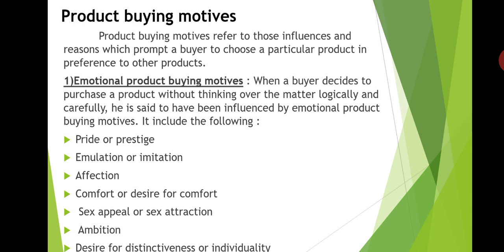One more is comfort and desire for comfort. Many products — for example, fans, refrigerators, washing machines, cushion beds, etc. — are bought by people because of their desire for comfort. They feel that products like fans, refrigerators, or ACs give them more comfort. So the desire for comfort is one of the important emotional buying motives.